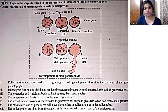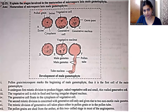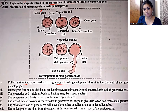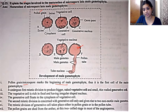The question is: explain the stages involved in the maturation of microspore into male gametophyte. Let's break the question into parts. We have to explain what stages are involved in the maturation. Microspore, which we call pollen grain, matures into male gametophyte. So, pollen grain or microspore marks the beginning of male gametophyte — meaning male gametophyte development starts or initiates with it. So, pollen grain or microspore is the first cell of male gametophyte.